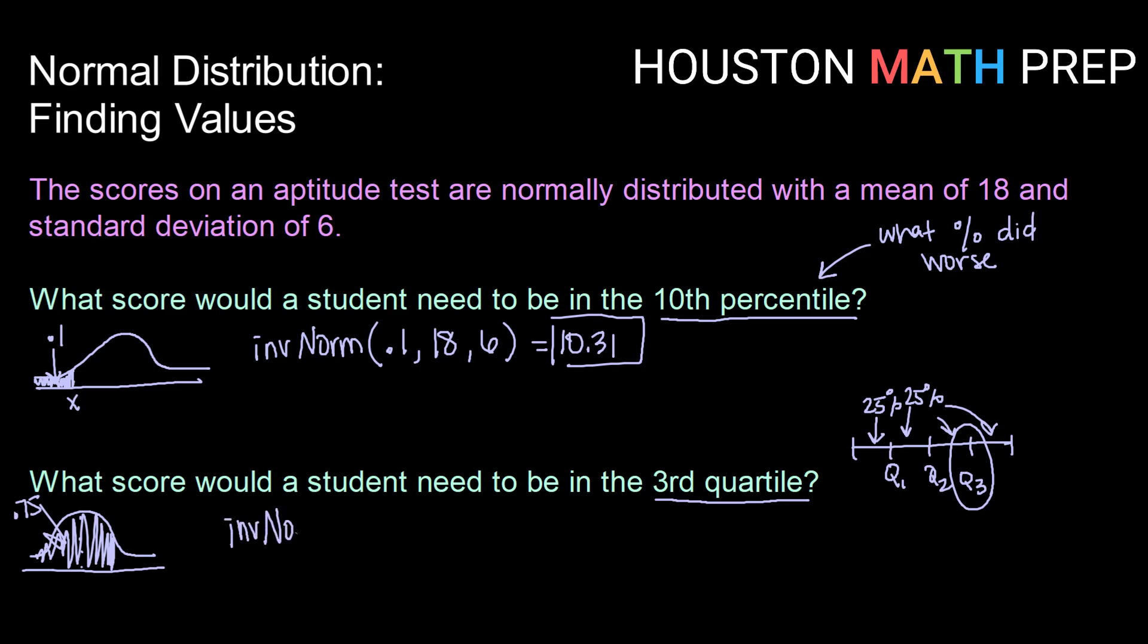So inverse norm of 0.75, a mean of 18, a standard deviation of 6. So to be in the third quartile, we would need a score of 22.05.